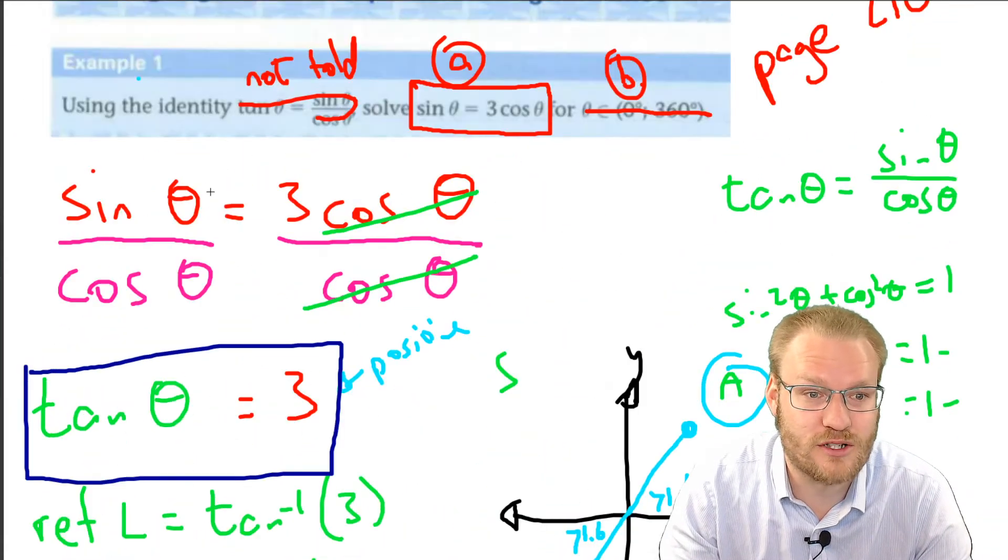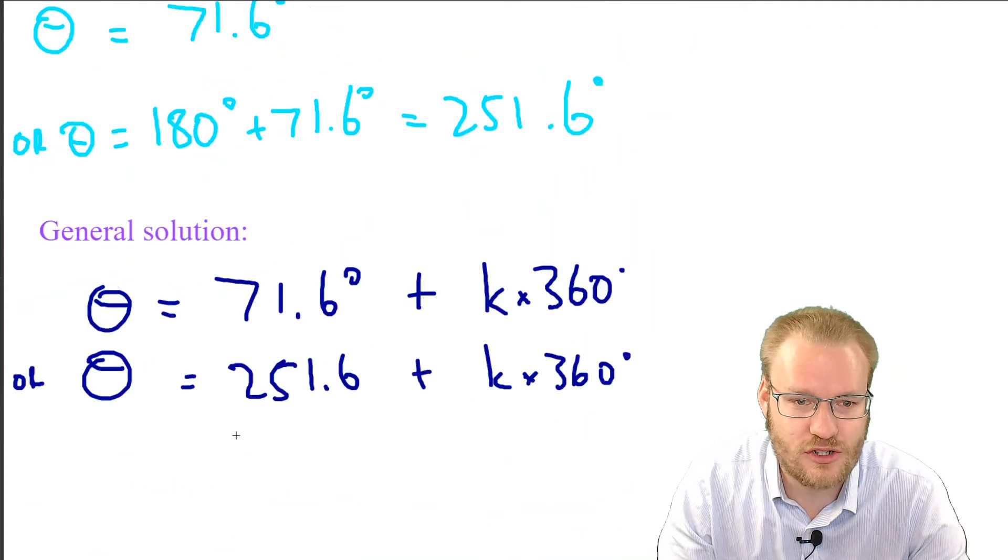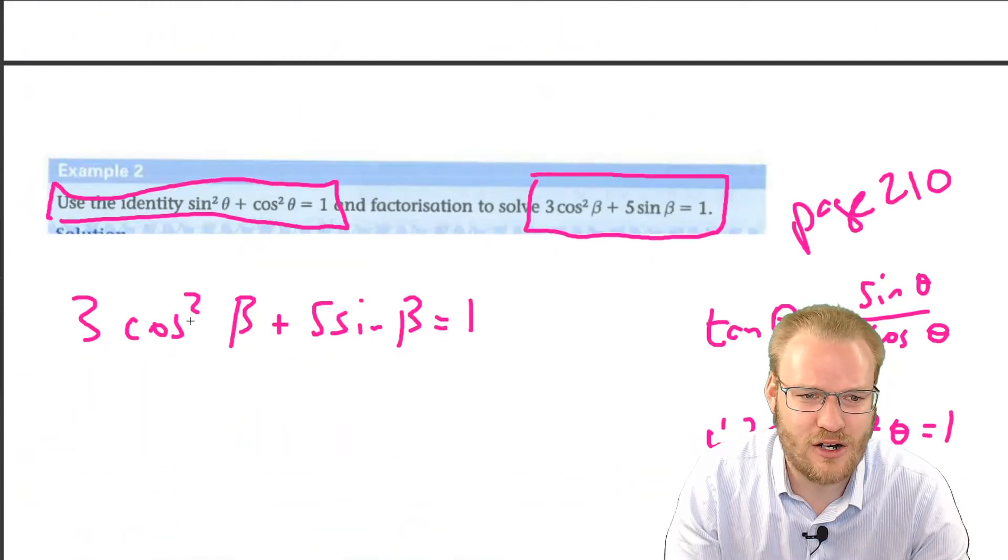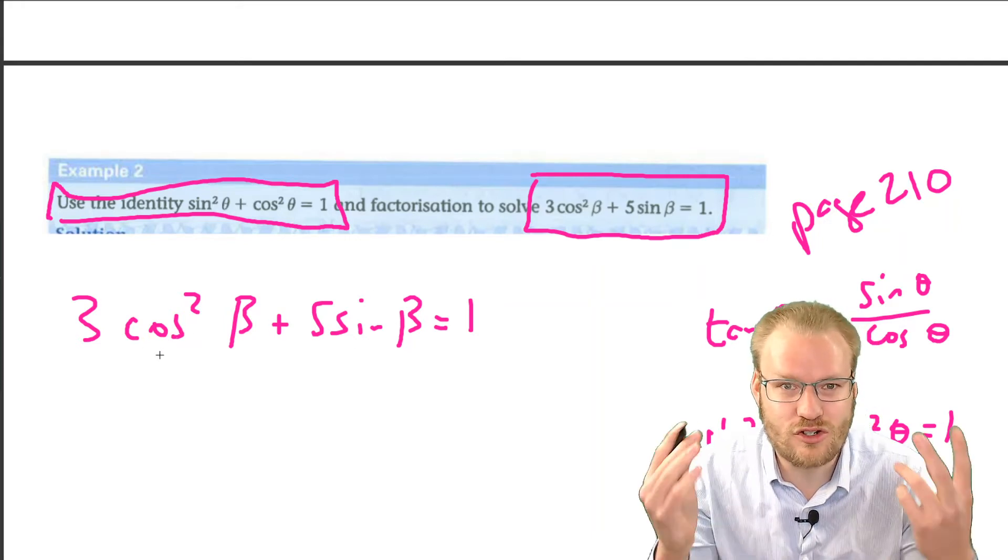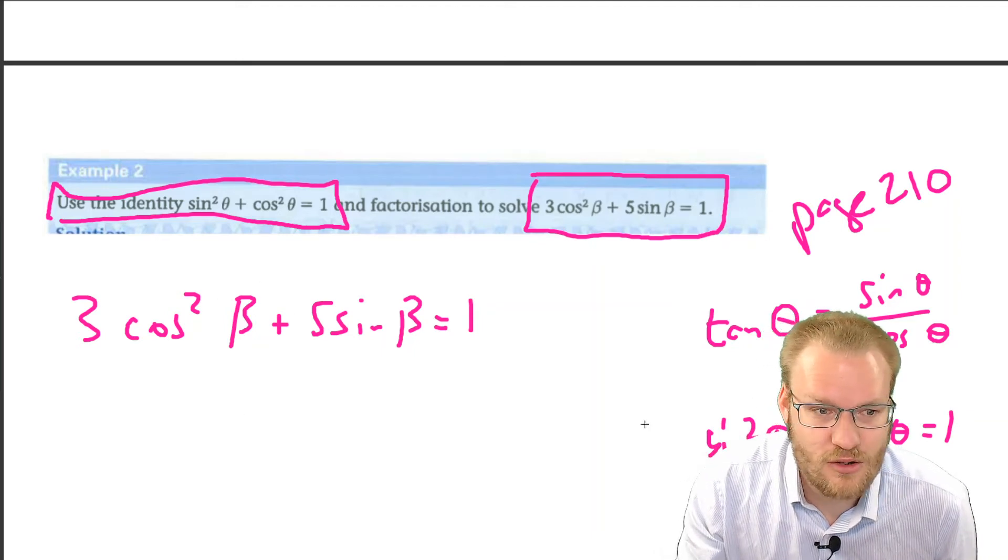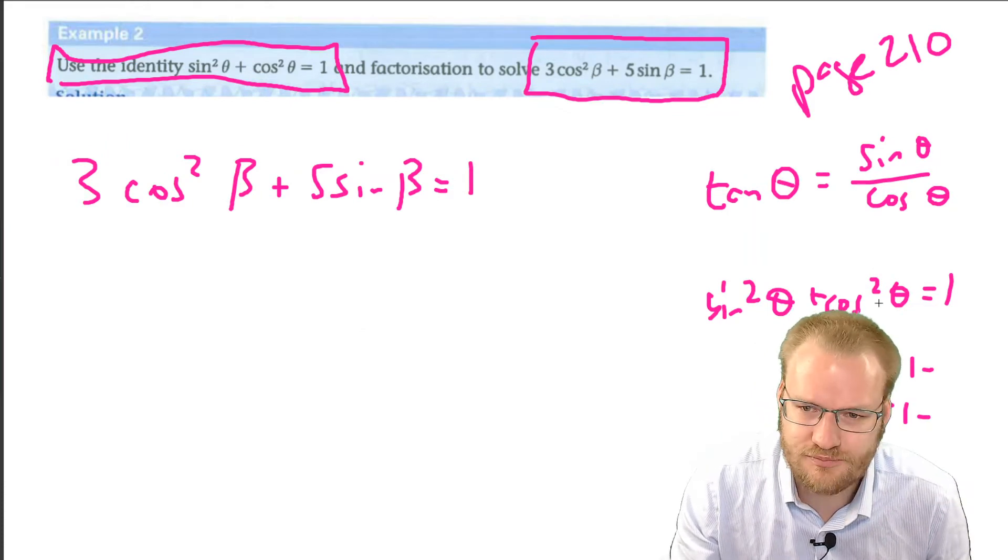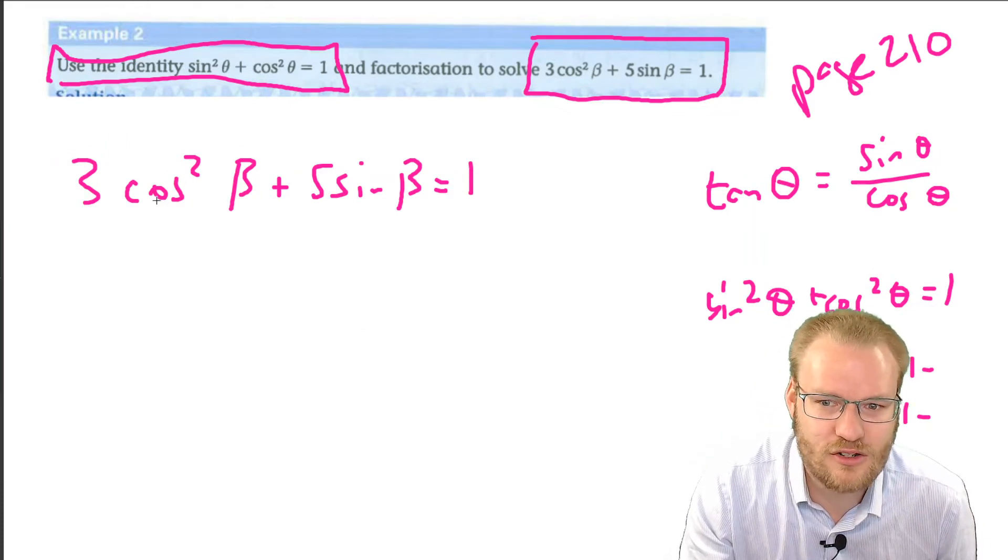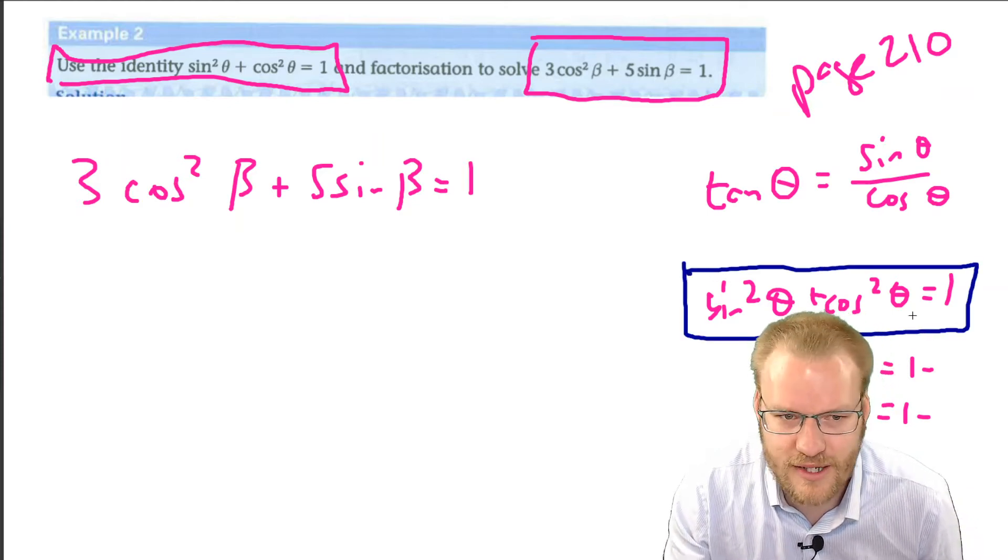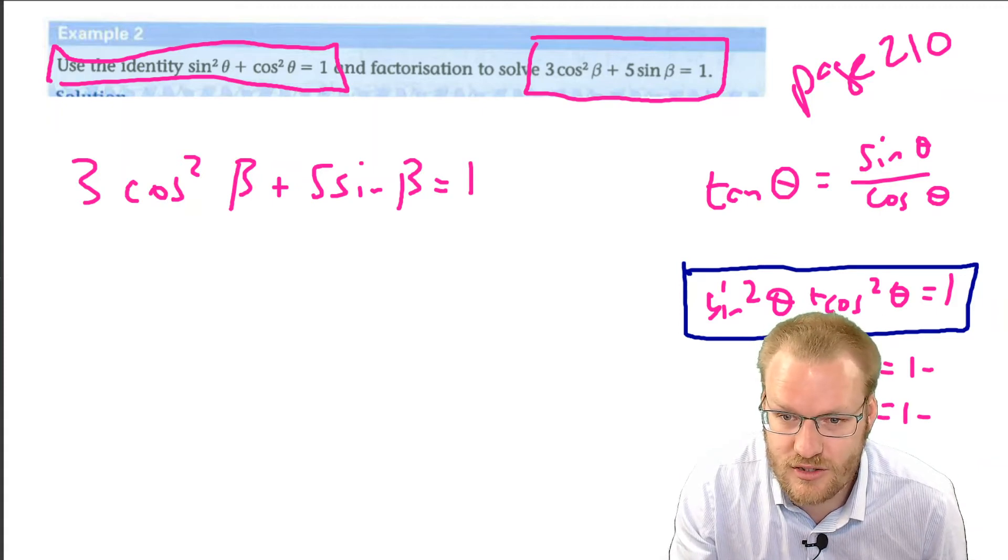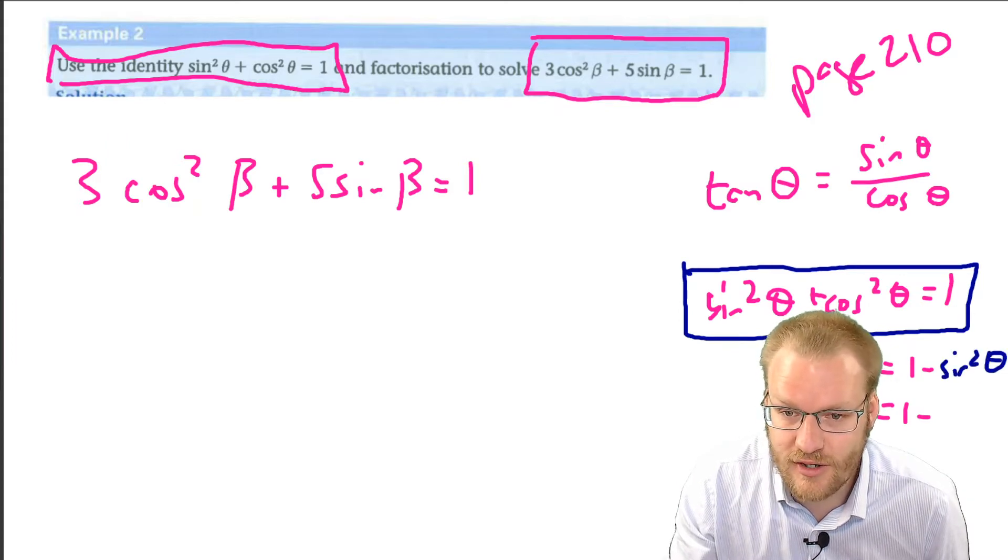In this question it's not going to work to divide by cos because we'll still get a cos. We don't want two trig functions, we want one. So we're going to use the identity to turn cos squared into sin squared. We've got cos²θ, so we must have subtracted sin²θ.